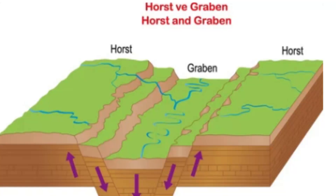What are Horst and Graben? Horst and Graben are geological terms that describe distinct landforms created by the movement of tectonic plates. The earth's crust is made up of a series of large plates that move slowly over time. As these plates shift and collide with each other, they can create a variety of different geological features, including mountains, valleys, and rifts.